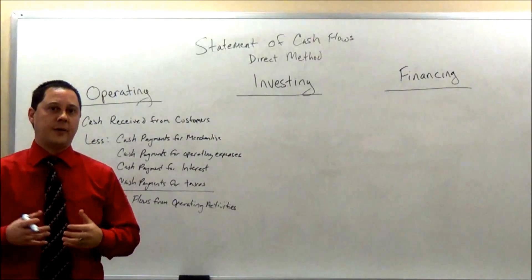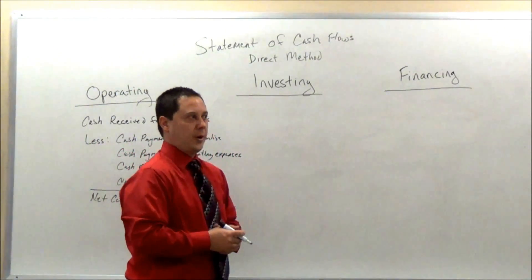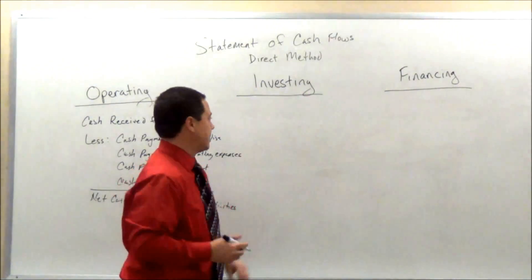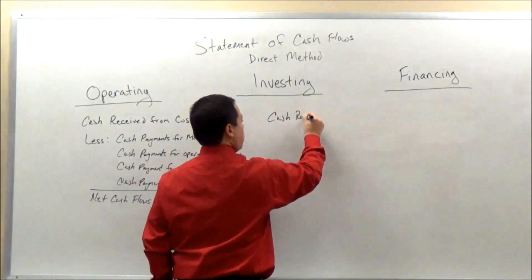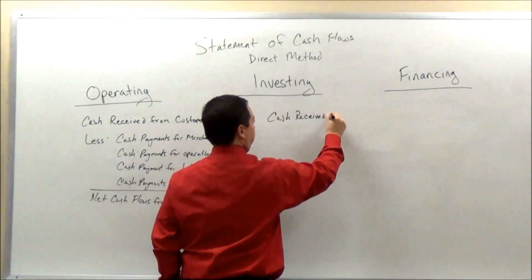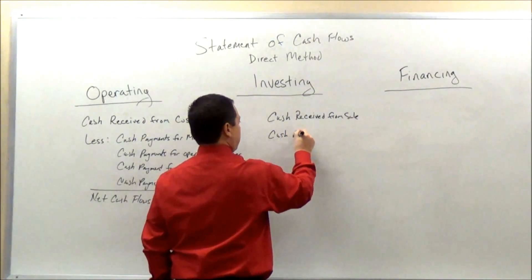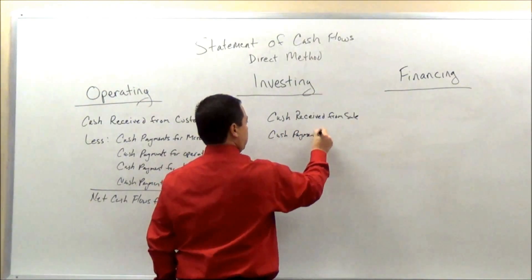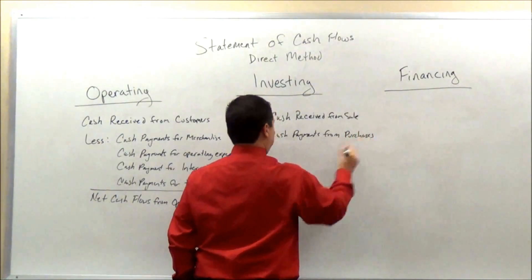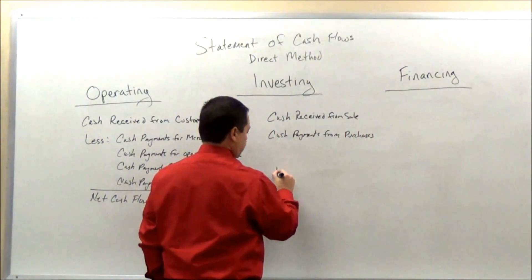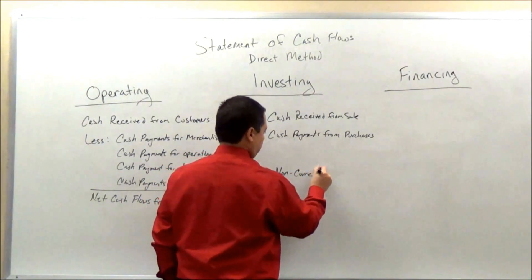It makes it a little easier than the indirect method. Now let's take a look at investing — very similar to what you saw in the indirect method. Basically we'll go over: cash received from sale, and then cash payments from purchases. This primarily focuses on our long-term or non-current assets.